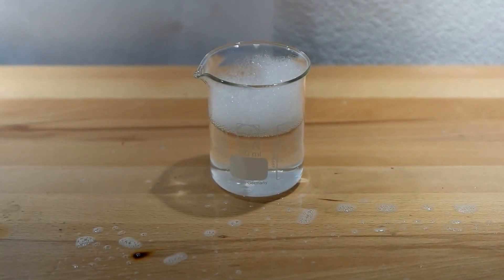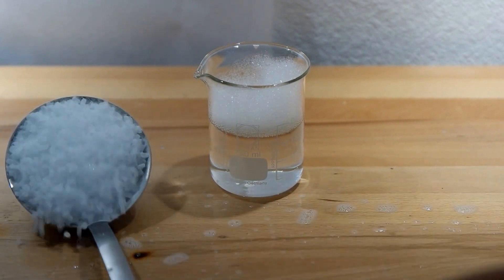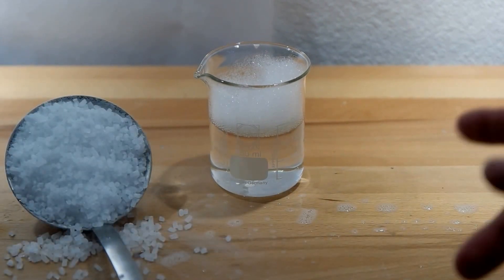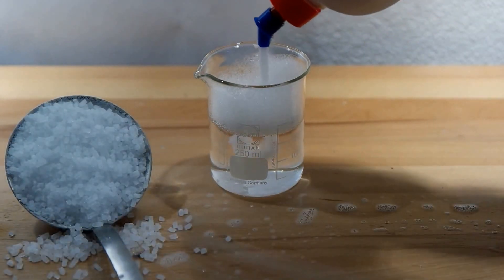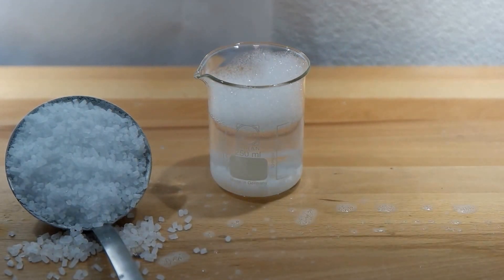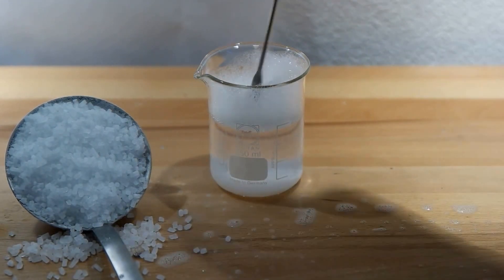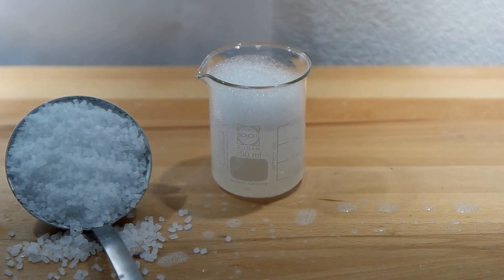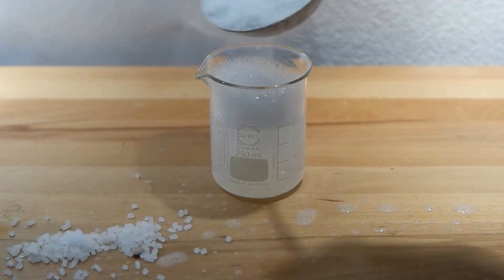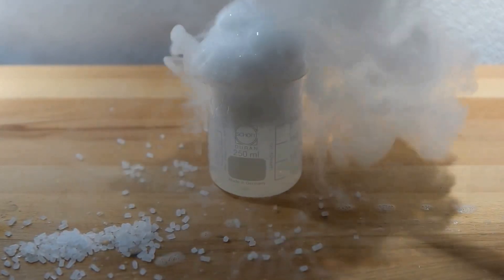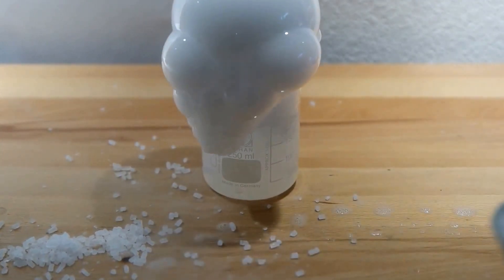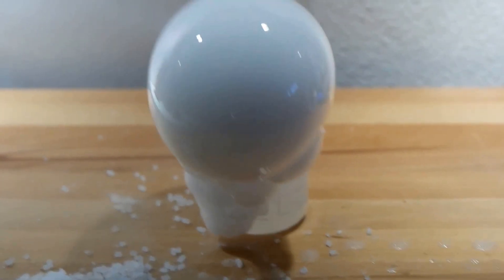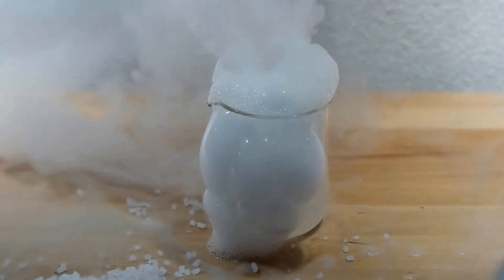Now this is not exactly the dry ice bubble experiment, but it's pretty similar. So I've got a beaker with some warm water and I add some soap. You stir it a bit. And now when you add dry ice, you can make some bubbles. And there are so many versions of the normal dry ice bubble experiments on YouTube that I didn't film that. But I think that's cool too, isn't it? Those big bubbles.